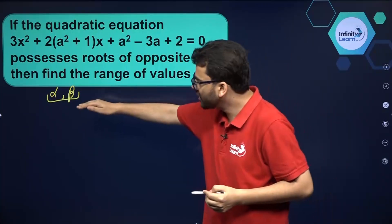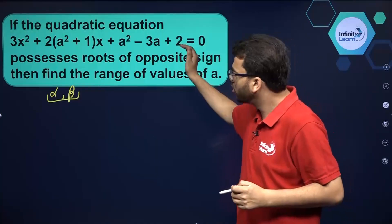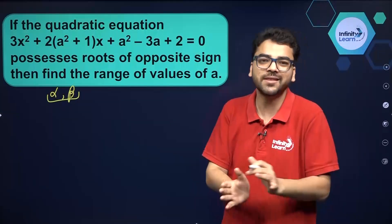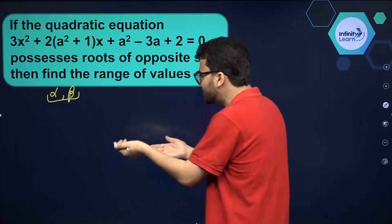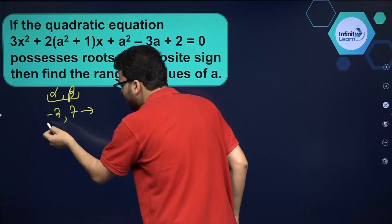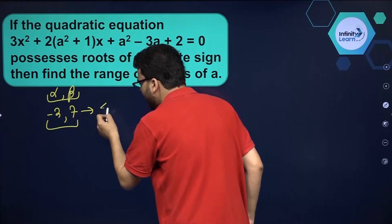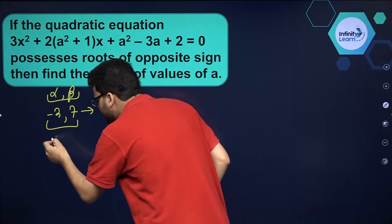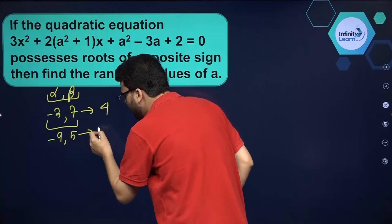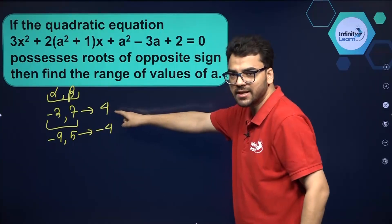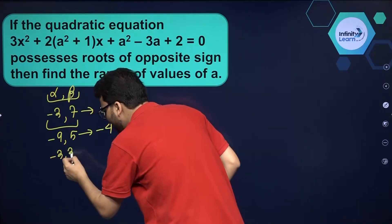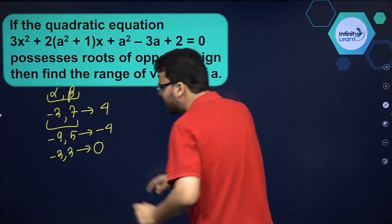If we are talking about the sum of roots, although we are not finding the roots here — just suppose the roots are of opposite signs, taking any random values. They can be like this: minus 3 plus 7 is coming out to be 4. And if the roots are minus 9 and 5, the sum is minus 4. So sum is positive, sum is negative.